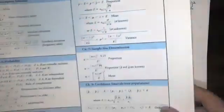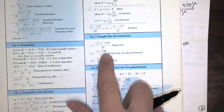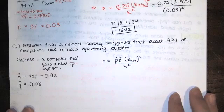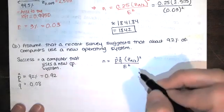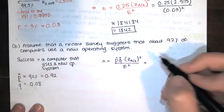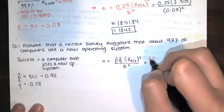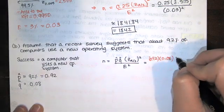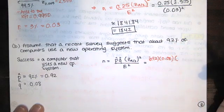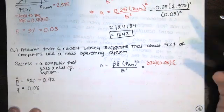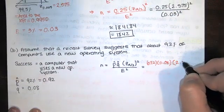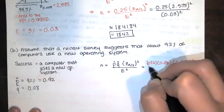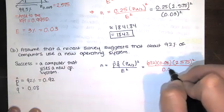And that P hat Q hat is standing in for that 0.25. You don't have to memorize it. It's right there on your sheet. It's just a rearrangement of that error formula. So we've got P hat is 92%, 0.92. Q hat is 8%, 0.08. Z sub alpha over two is still the same from this one with a 99% confidence interval. We've got a Z equals 2.575. We're squaring that. And then we're dividing by that error squared.